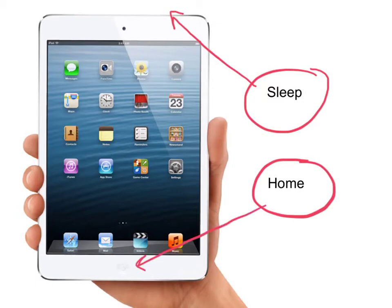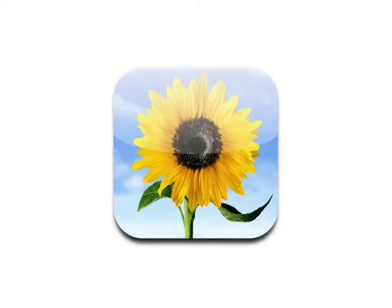Quickly press and release sleep and home at the exact same time and your screen will flash and you'll hear a camera noise. The screenshot is saved as an image right inside of your camera roll and you can view it in the Photos app.